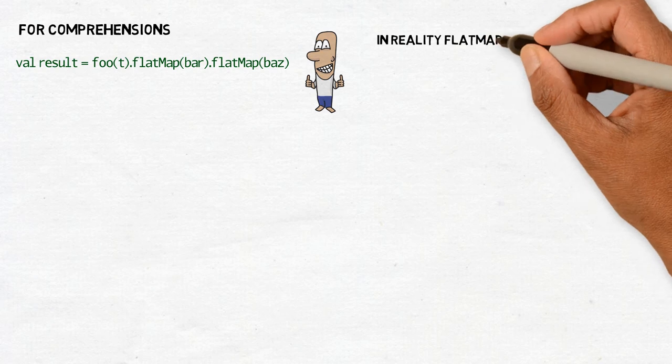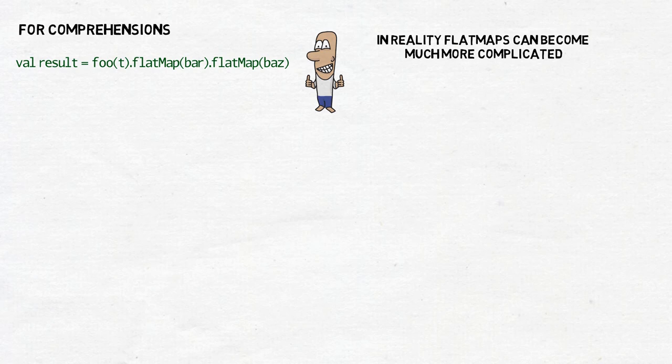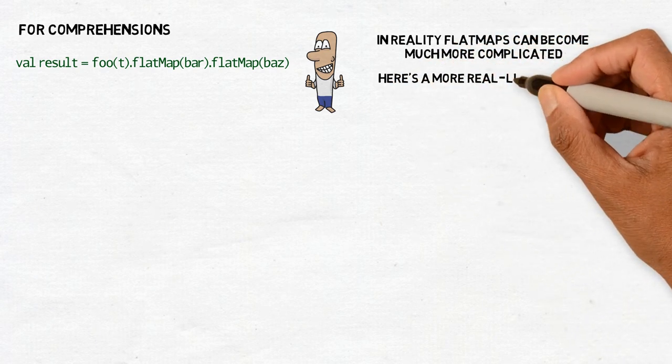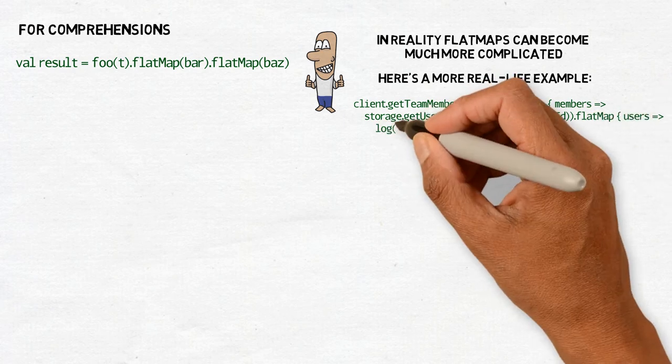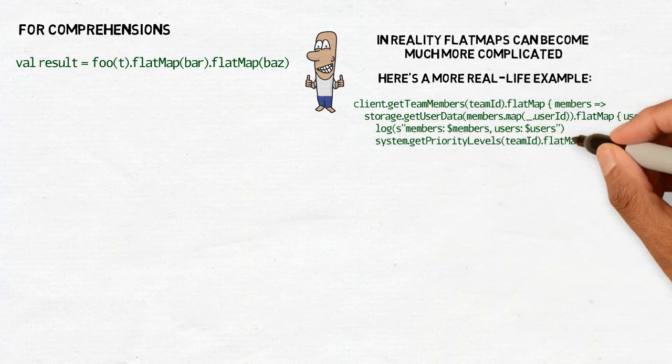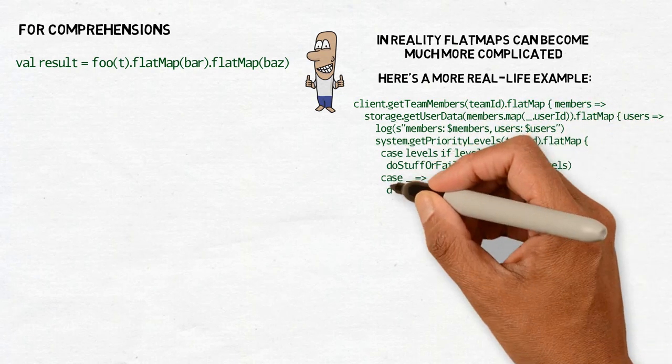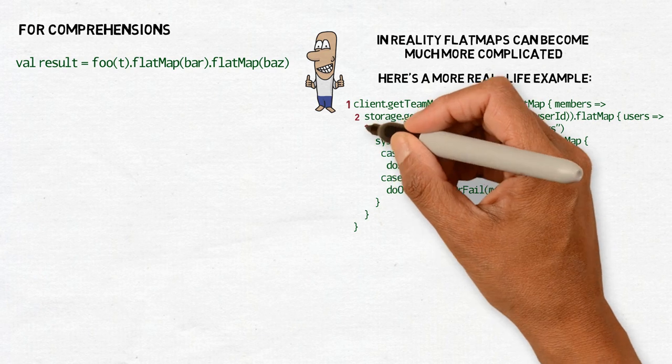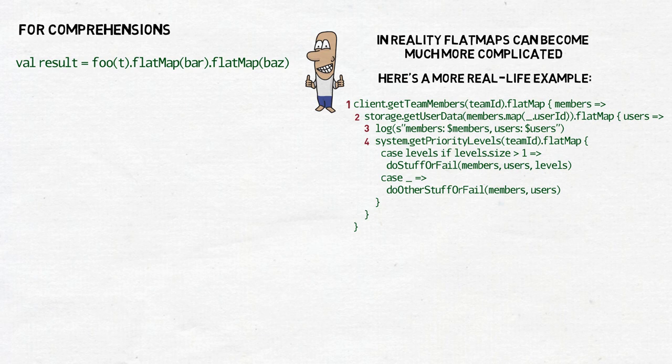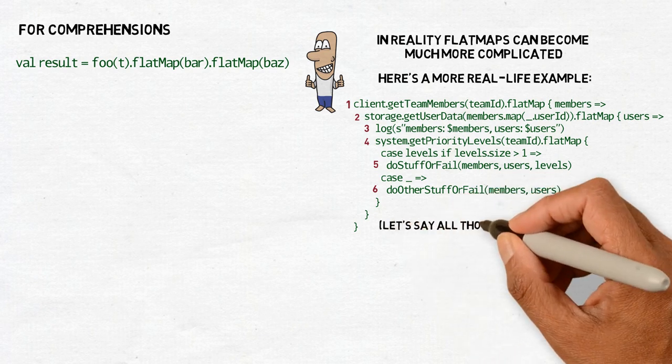There can be flatmaps nested in flatmaps, we may need to perform some operations in between them, and we may also need to use results of more than one function as arguments. Here is a more real-life example taken from the Wire Android codebase. We get the members of a team of the given ID. We flatmap that resulting sequence of members to a call to get user data from the start. So for every member of the team, we want some kind of user data. And then we flatmap that sequence of user data again, but this time we first need priority levels from the team and having together user data and priority levels, we can do some stuff or fail, or maybe do some other stuff or fail, depending on the number of priority levels.